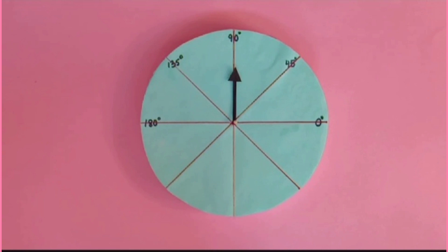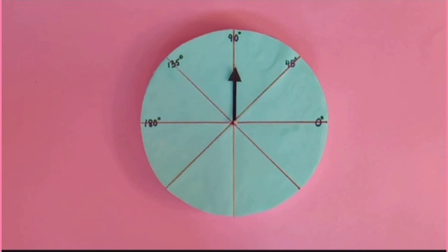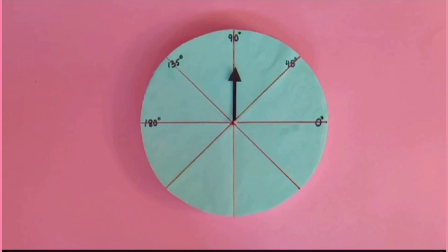Students, tell me, what will be the half of 90 degree or right angle? Yes, it will be 45 degree angle. Now tell me, what will be the double of 90 degree or right angle? It will be 180 degree angle.